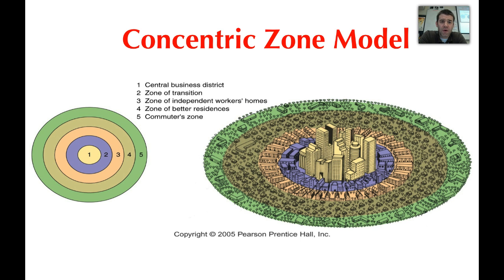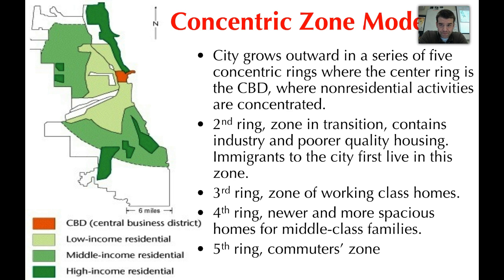The model has five rings: starting with the central business district, the zone of transition, the zone of independent workers' homes, a zone of better residences, and a commuter zone. The zone of transition is where we find the older, often poor quality housing in U.S. cities, sometimes mixed with industry. This is also where immigrants tend to live.